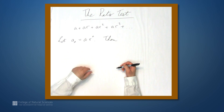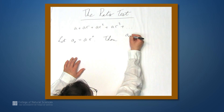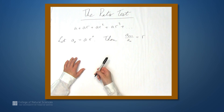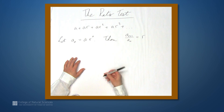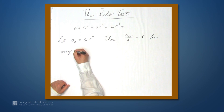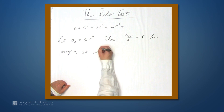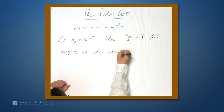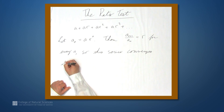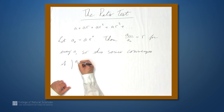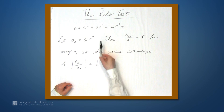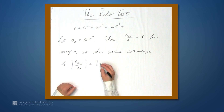If a sub n is a times r to the n, then the ratio of a sub n plus 1 over a sub n is just r, because we get a sub n plus 1 by taking a sub n and multiplying it by r. So this is always equal to r — this is true for every n. This series converges if the absolute value of a sub n plus 1 over a sub n is less than 1. This is just a restatement of what we already know: if the absolute value of r is less than 1, then the series converges.